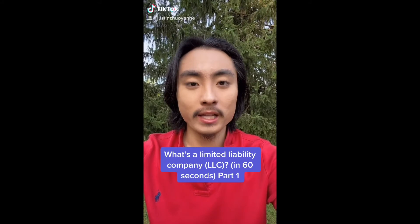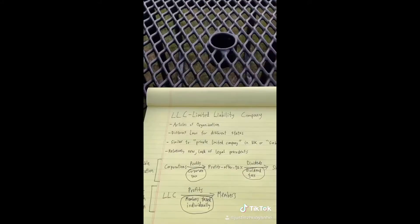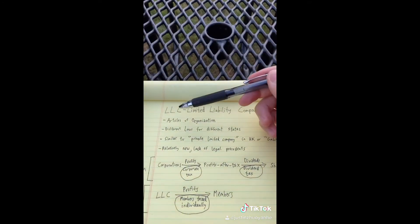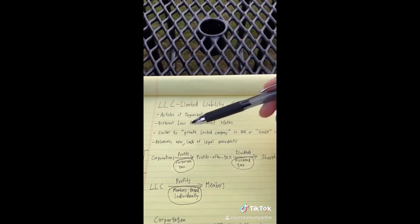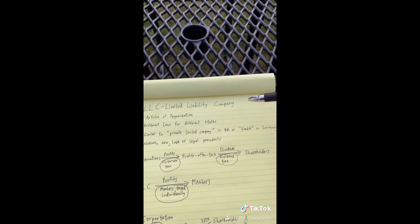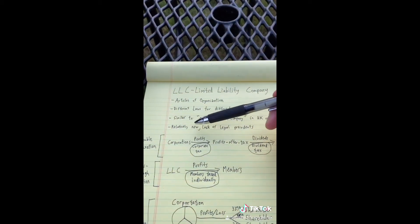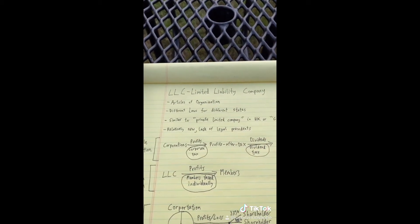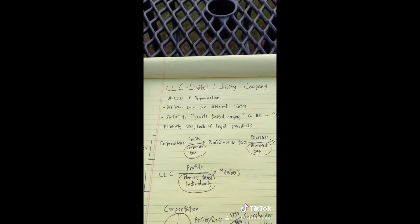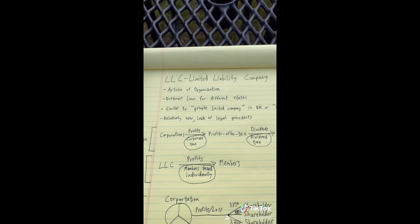What's a limited liability company or LLC in 60 seconds? An LLC is a type of business entity formed by filing articles of organization with the state. Different states have different laws for LLCs, and different countries have different names for a similar type of business entity. It's also relatively new, so there is a lack of legal precedent for LLCs, meaning that when you go into legal situations you may not know what will happen because it hasn't happened before.